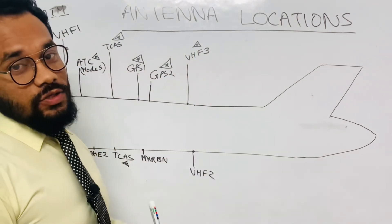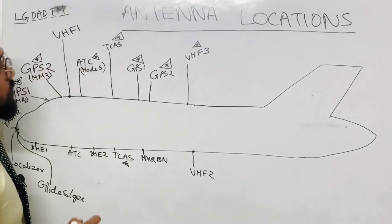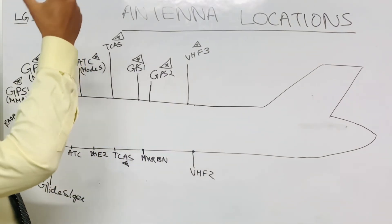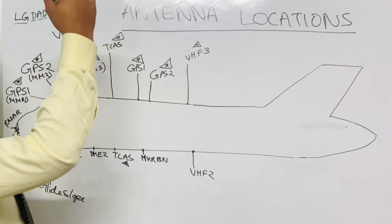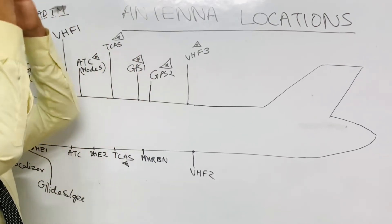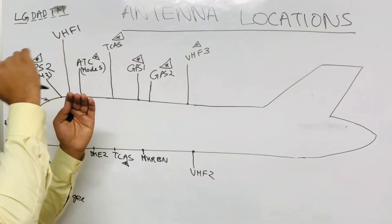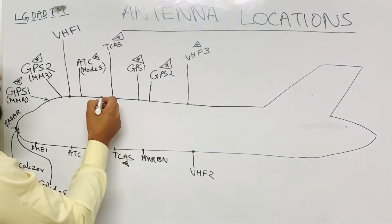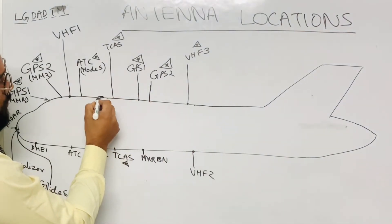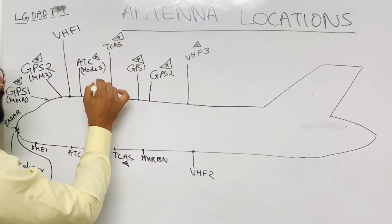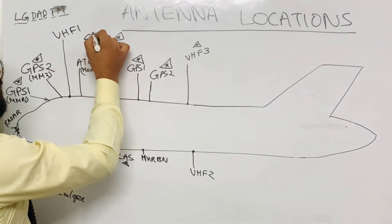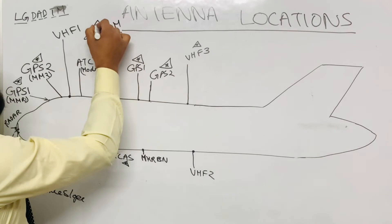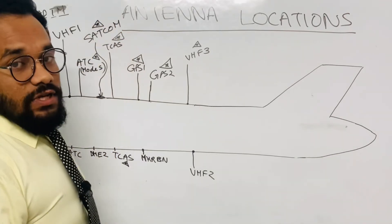The SATCOM antenna is also located on top of the fuselage. For satellite communication, signals come from the sky, so the antenna must face upward. The SATCOM antenna is mounted on top of the fuselage — I'm drawing a zigzag line to mark its location. This is an optional feature and may vary with various MSN numbers; it may or may not be present.